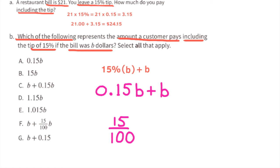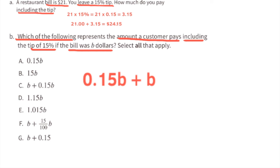0.15 is also 15 hundredths, and we can write 15 hundredths as a fraction like this: 15 over 100. 15 hundredths times b plus b. The order doesn't matter. We can also rewrite this as b plus 15 hundredths b. This is a match with f. Let's go back to the 15 hundredths written as a decimal. We have 0.15b plus b. Again, we can rewrite the order, and we have b plus 15 hundredths times b, or b plus 0.15b.